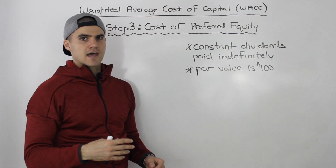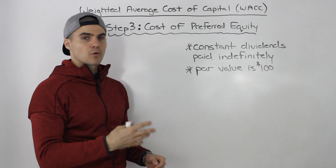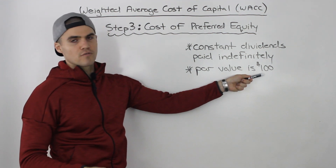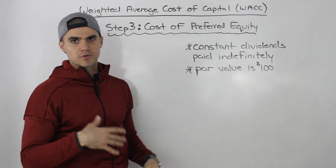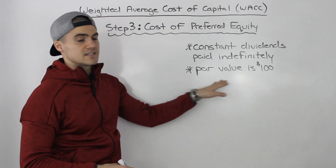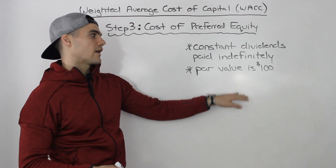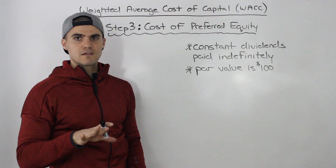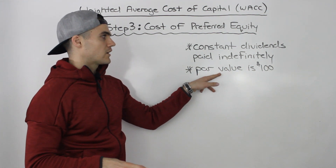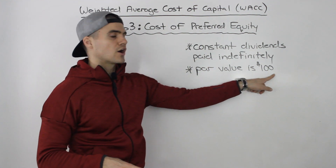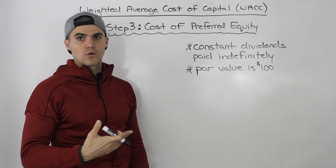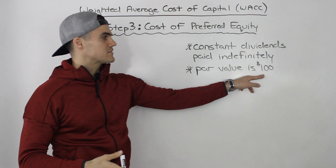Sometimes questions will straight up give you the dividend amount in dollar terms, but sometimes they'll express it as a percentage. If they express it as a percentage, usually the par value of preferred equity is based on $100. So let's say a question says that preferred equity is paying a 4% preferred dividend — the 4% is going to be based on that par value of $100, so 100 times 0.04 gives us a $4 dividend. That's the constant dividend being paid forever.